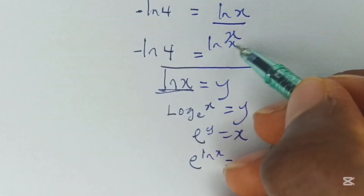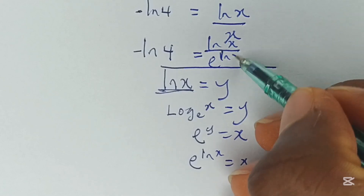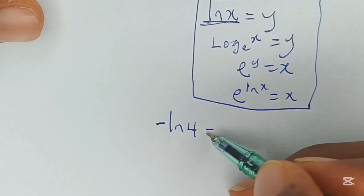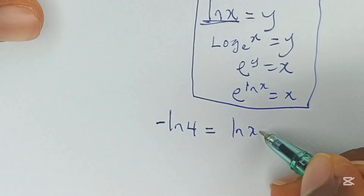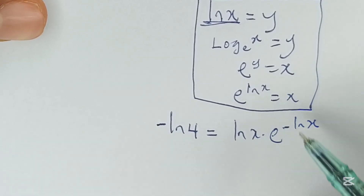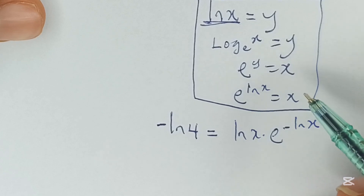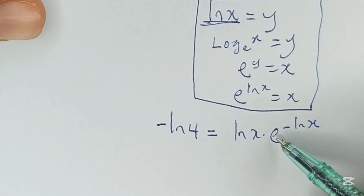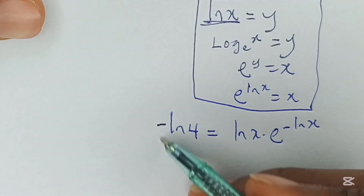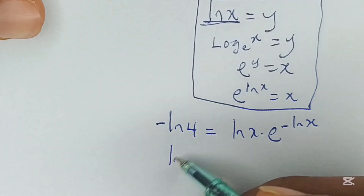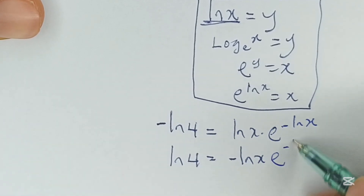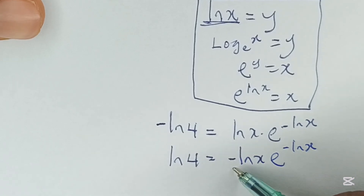Hence, you're going to have ln of x divided by e to the power of ln of x. Moving on, we now have negative ln of 4 to be equal to ln of x multiplied by e to the power of negative ln of x. The reason for this is that 1 over a to the power of m is equal to a raised to the power of negative m, so this becomes e to the power of negative whatever it was before. Now let's multiply both sides by negative 1.